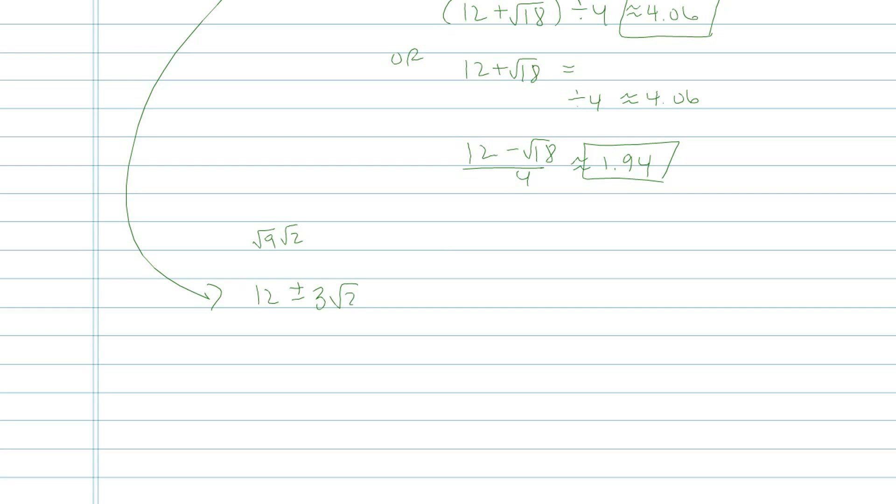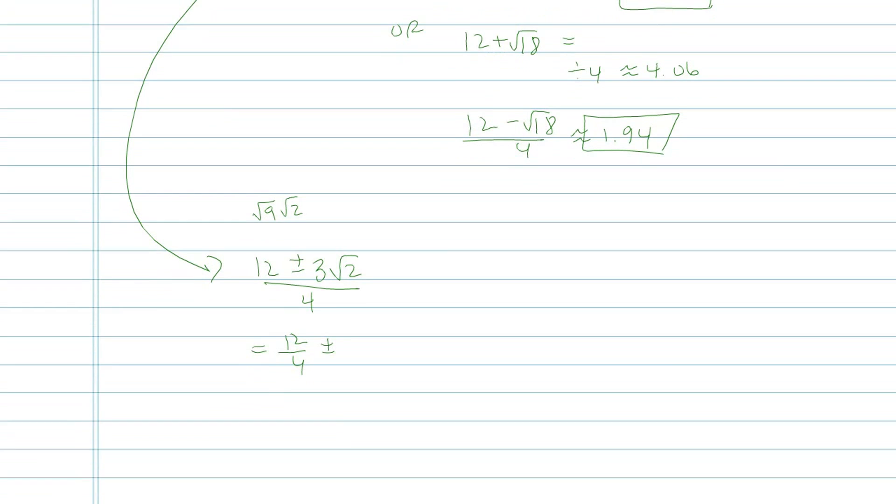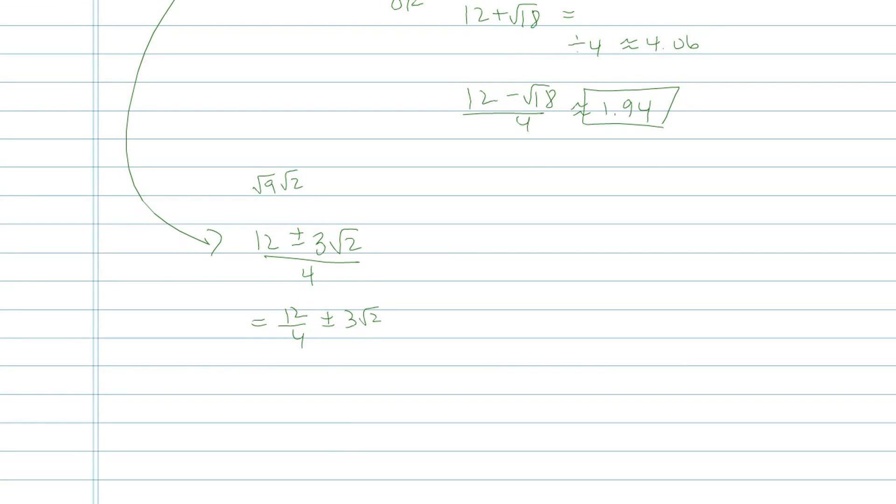So what I'm working with now is 12 plus 3 root 2 divided by 4. What I'm going to do to simplify that is write it as two separate fractions, 12 over 4 plus or minus 3 root 2 over 4, and simplify them separately. The first fraction, of course, is just 3. So this is my exact answer.